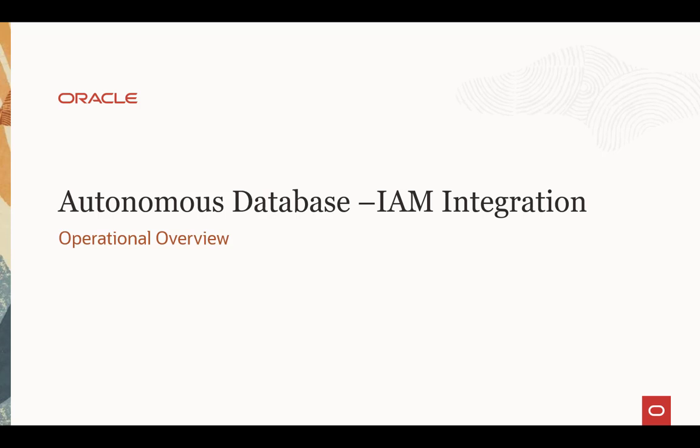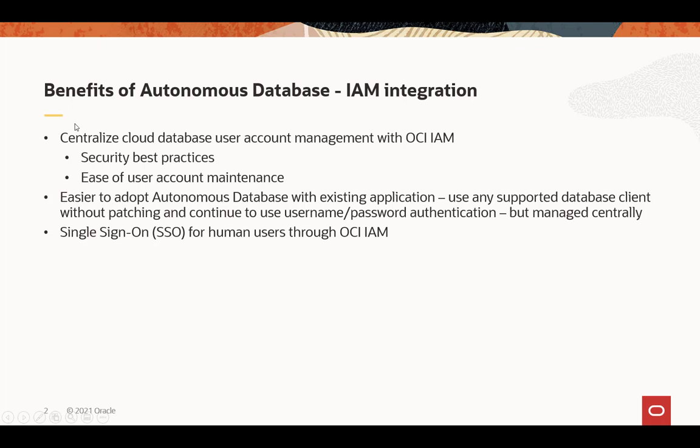This is the operational overview of the OCI IAM integration with the Autonomous Database. In a prior video, we talked about the benefits this provides, including improved security, ease of account maintenance for DBAs, the ability to take existing applications with username and password login and shift them into an OCI service, and to use IAM as a central repository for passwords. For human users, this enables single sign-on for OCI IAM, just like they do with other OCI services.